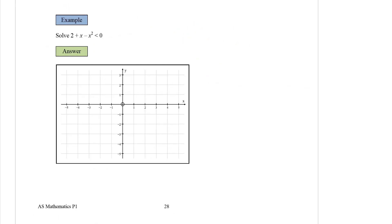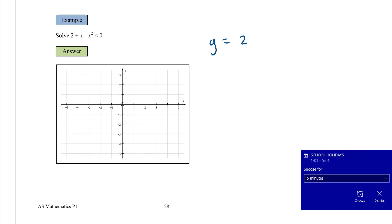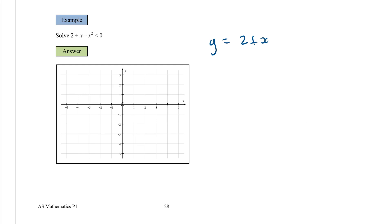This one here, we're going to try and draw this thing. So we want to draw y equals 2 plus x minus x squared. Let's try and factorize that thing. We're going to have an x and an x in here. One's going to be positive, one's going to be negative. It's going to be 2 and 1, and we want the middle term to be plus 1.